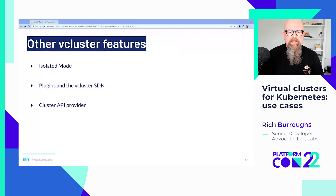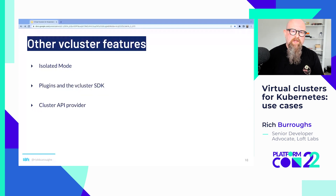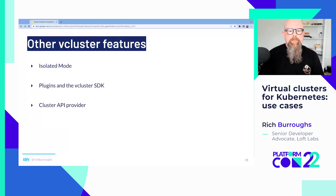Some other features of vCluster: there's an isolated mode that automatically creates a pod security standard, resource quotas, and a network policy — just a flag you pass in to invoke that. There's now a plugin system where you can customize the behavior of the syncer, like automatically installing a deployment when the vCluster spins up, or syncing certain resources like CRDs or secrets from the host cluster. There's a vCluster SDK and the plugins are written in Go. And we've recently added a cluster API provider for vCluster, meaning you can use the standard Kubernetes cluster API to spin up virtual clusters.